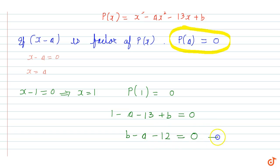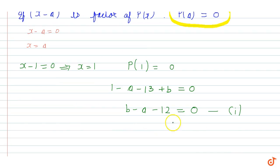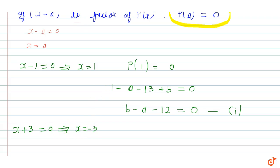This gives us Equation 1: b minus a minus 12 = 0. Now we are also given that x plus 3 is a factor. So if x plus 3 is also a factor, we set x plus 3 equal to 0, which gives us x equal to minus 3.